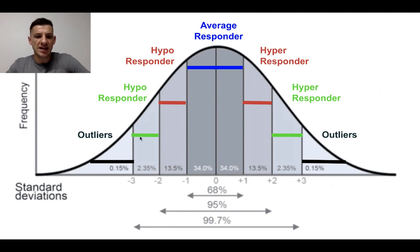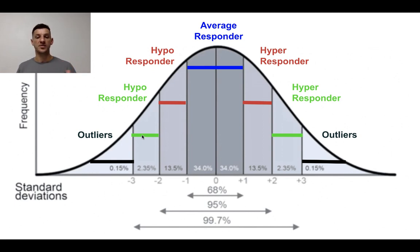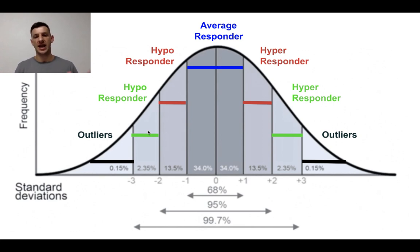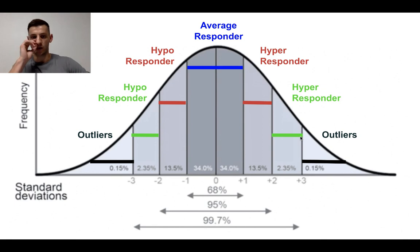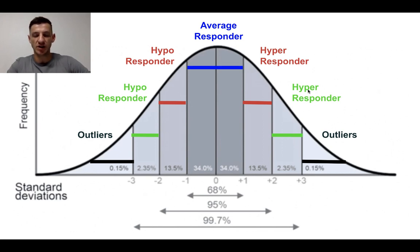In the green, you get people who respond quite significantly compared to the average person. About 2.3% of people here will really take a long time to see the same rate of growth as compared to the average responder. And likewise, you get people who just so much as look at a machine or an exercise and they adapt — they lose weight and pick up muscle. Almost seems unfair, but these people exist.